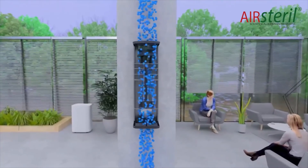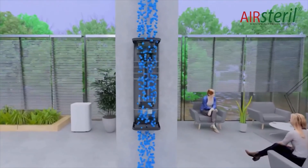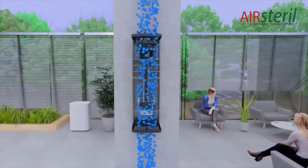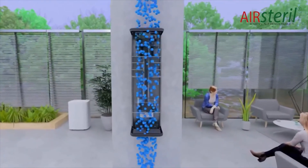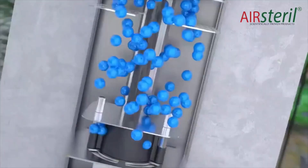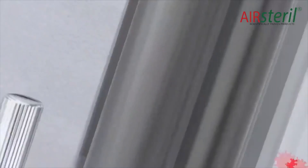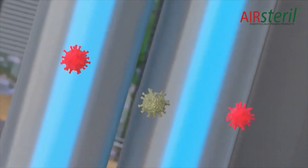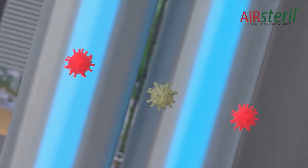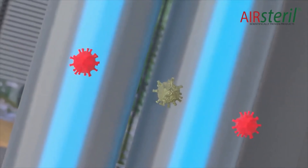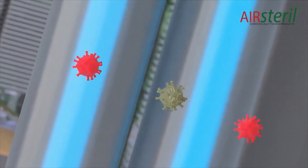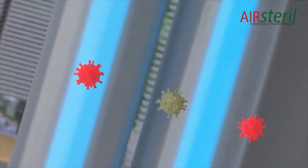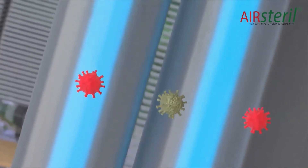Inside the unit, contaminated air is subjected to germicidal UVC rays — ultraviolet light which kills or inactivates microorganisms by disrupting their DNA, thus destroying their vital functions. This includes viruses, bacteria, moulds and fungi.